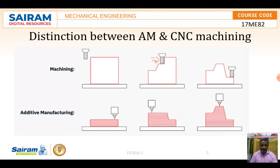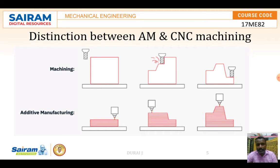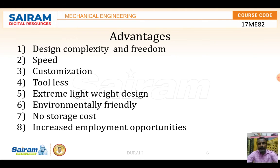One more difference is post-processing. In additive manufacturing, post-processing is almost not required. However, after CNC machining operations, post-processing such as honing, lapping, or other finishing processes may be required.